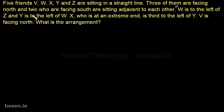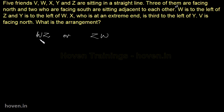W is to the left of Z, so I write on paper: W and Z are together — either WZ or ZW is possible. Then it says Y is to the left of W, meaning Y and W are neighbors. Since one side of W is already occupied by Z, Y can only be on the other side. So the arrangement becomes either Y-W-Z or Z-W-Y. These are the two possibilities after this step.